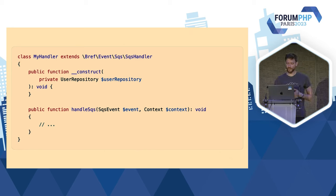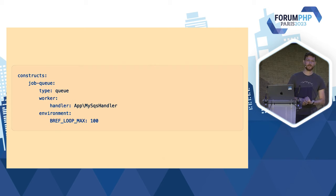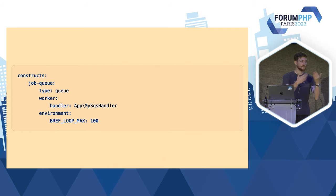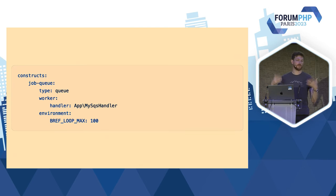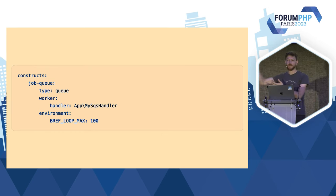On n'a plus besoin de penser à : j'écoute un événement S3, je vais faire une commande qui va être appelée en CLI. Non, c'est directement une classe, on a les infos et on fait notre code. On a aussi des optimisations pour garder les kernels Symfony ou les kernels Laravel en mémoire — Bref LoopMax — donc ça les garde en mémoire entre les requêtes ou entre les invocations pour garder les services vivants. C'est un peu ce qu'on a sur Roadrunner, Laravel Octane, Symfony Runtime. Ça vient avec des inconvénients : il faut faire attention à la mémoire, pas faire fuiter des infos d'un client entre les invocations.